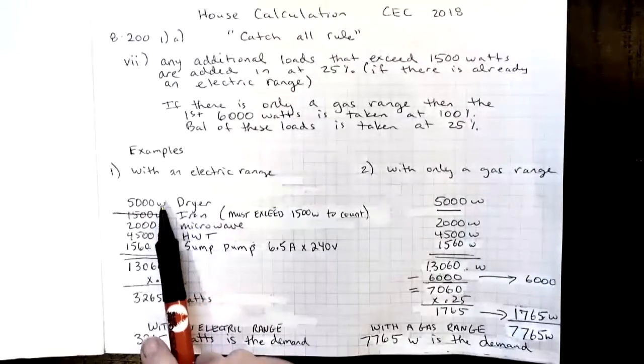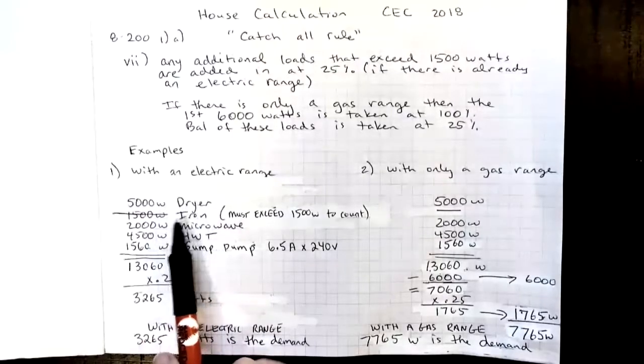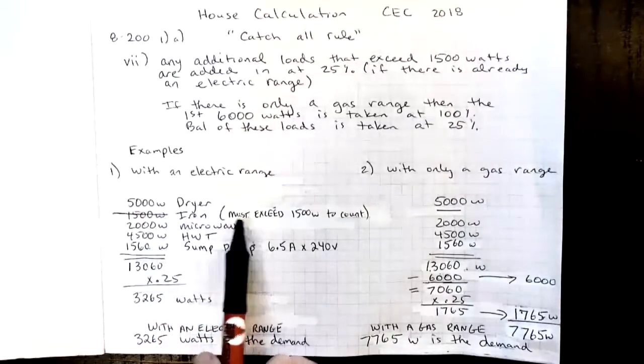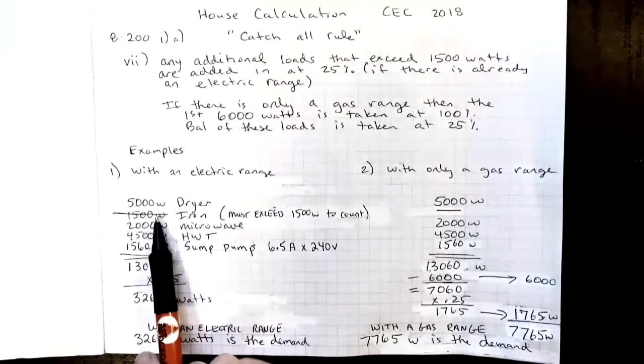The dryer is 5000 watts, the iron is only 1500 watts, and the rule said it must exceed 1500 watts to count. So I've crossed it out, we're not going to add that in.